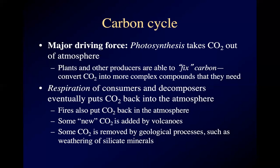The carbon cycle describes the way atoms of carbon get used and reused. The driving forces are photosynthesis and respiration. In photosynthesis, plants take carbon dioxide gas out of the atmosphere and by chemical processes stick molecules of CO2 and water together to make simple sugars, which are the building blocks for everything else the plant needs. We refer to this as fixing carbon.